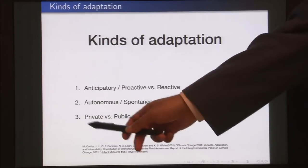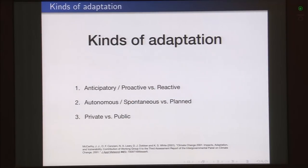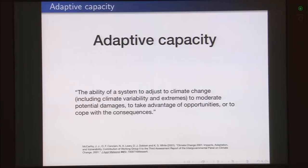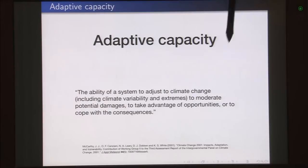Private versus public adaptation: adaptation could be done at the level of individuals or at the public or societal scale. Next we talk about adaptive capacity — the ability of a system to adjust to climate change including climate variability and extremes, to moderate potential damages, to take advantage of opportunities, or to cope with consequences. Essentially, adaptive capacity refers to the capacity or ability of a system to adapt or adjust itself, especially to climate change.